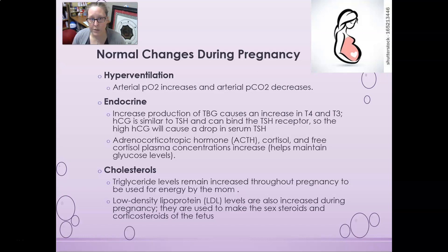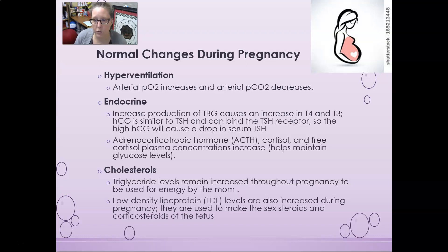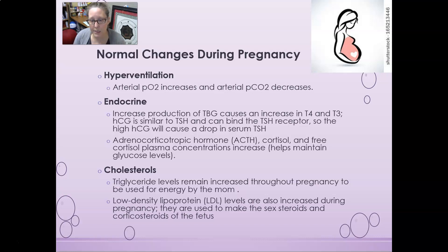It is interesting to note that HCG — human chorionic gonadotropin — is very similar to TSH. It is so similar that it can bind the TSH receptor and trigger the release of T3 and T4. High levels of HCG as they climb, especially through the first trimester, can cause a drop in serum TSH. ACTH, cortisol, and free cortisol plasma concentrations will all increase to help maintain glucose levels for the baby. Cholesterol and triglycerides will remain increased throughout pregnancy — triglycerides for energy use by mom, and LDL cholesterol also increased, as it is used to synthesize sex steroids and corticosteroids in the fetus.